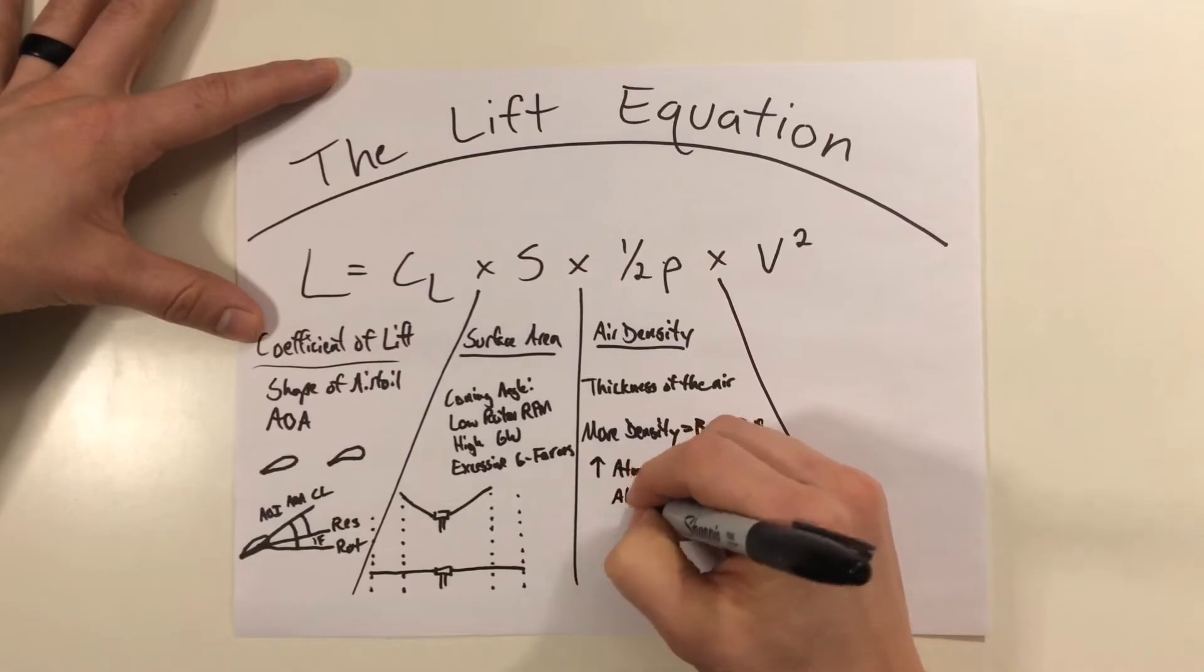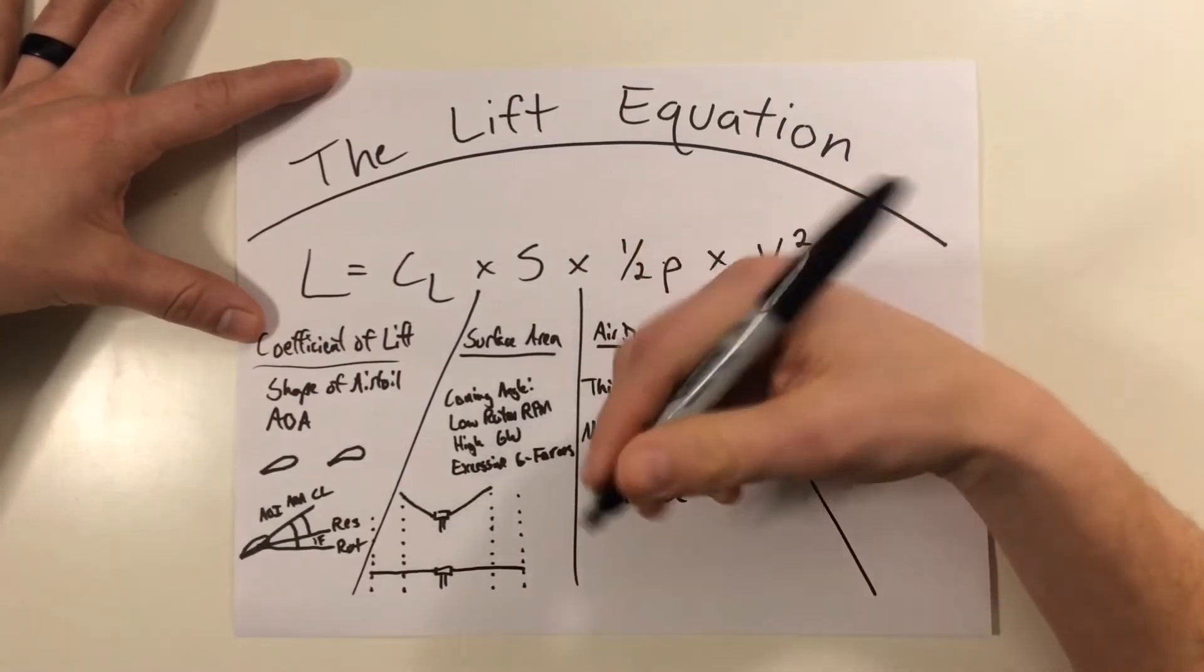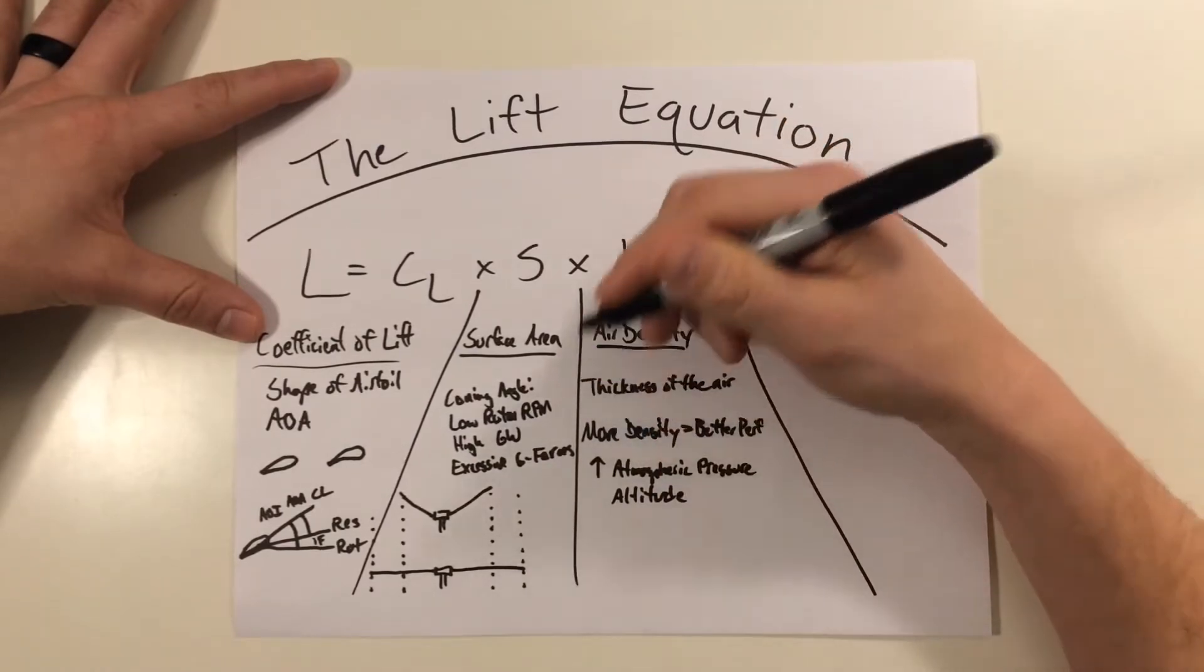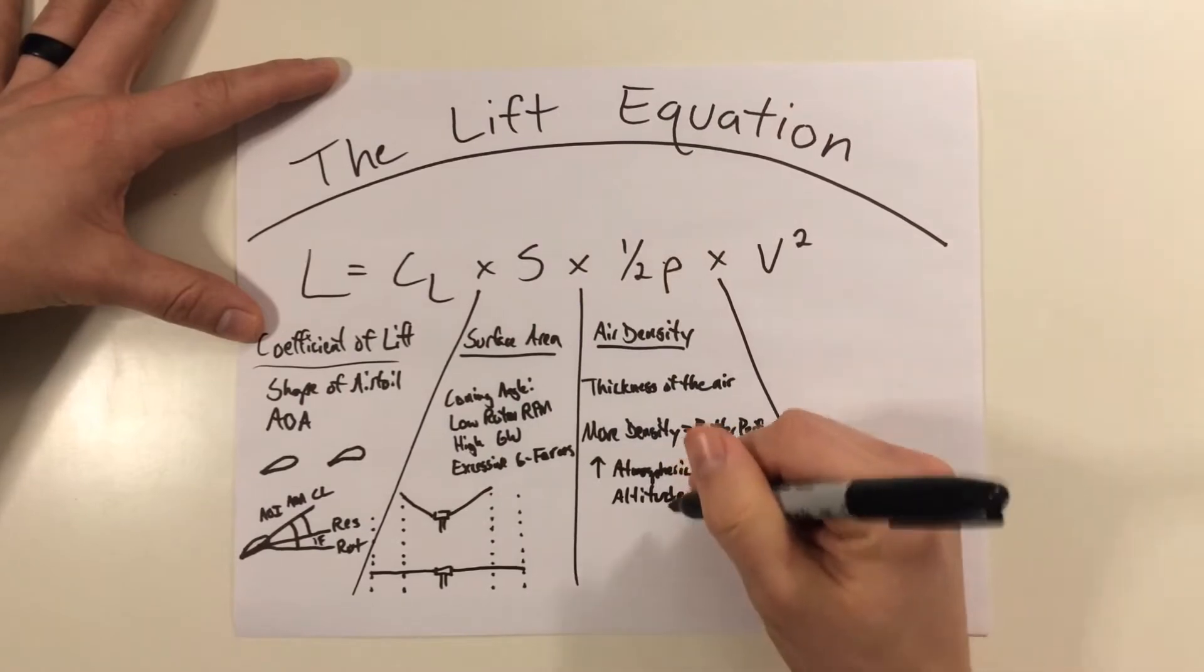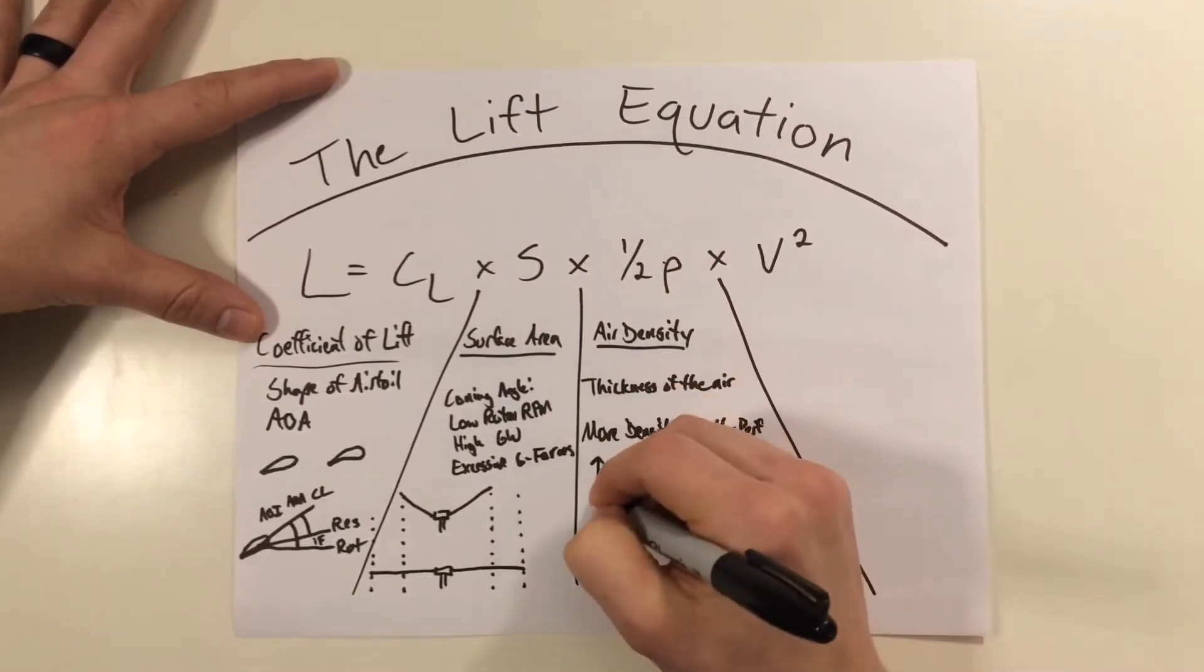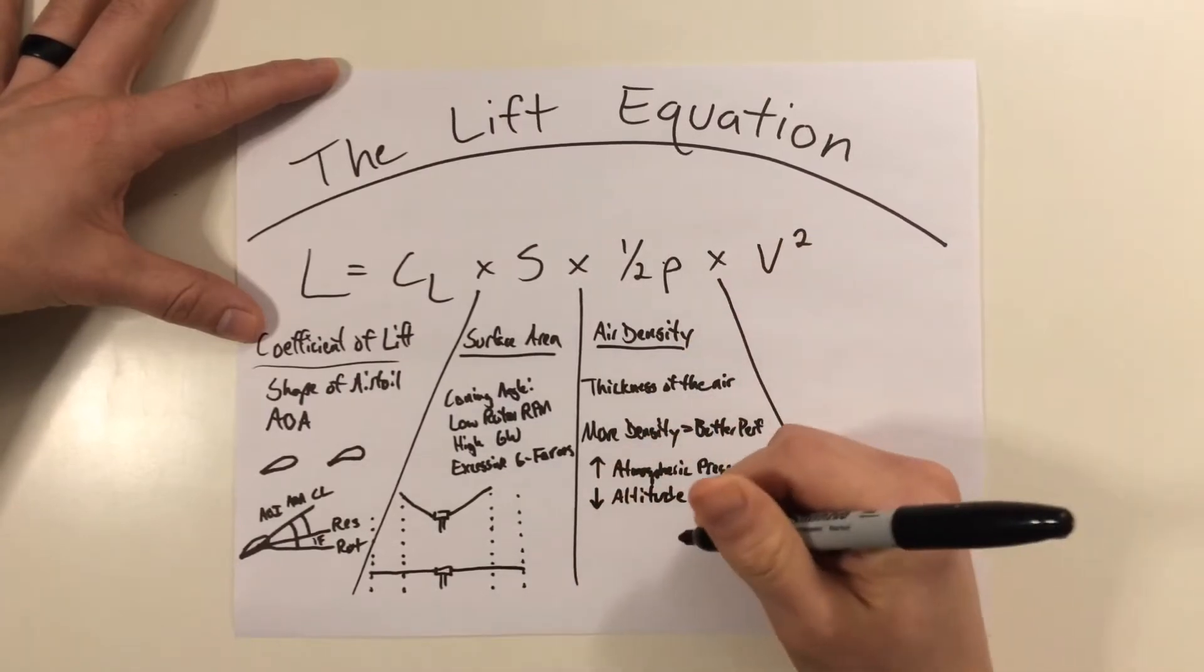Next thing to consider would be your altitude. Now we can affect the altitudes that we do fly. But just noting that as altitude increases, the air is thinner because molecules are spaced farther apart. So this is going to make the air less dense. So for better performance, we want lower altitudes for more dense air.